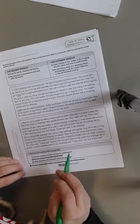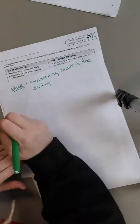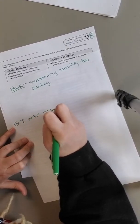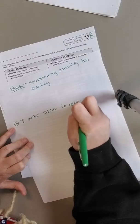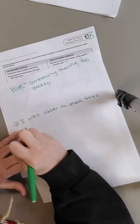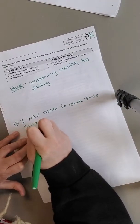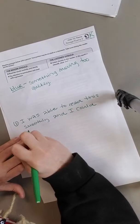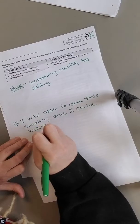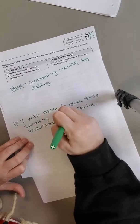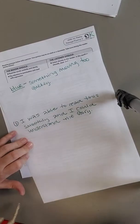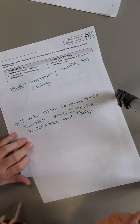So was the reading smooth and easy to understand? So you would write number one. I was able to read this smoothly and I could understand the story. So that could be what you would write here. Or it could be the opposite. Maybe it was hard for you to read this and you couldn't understand it.